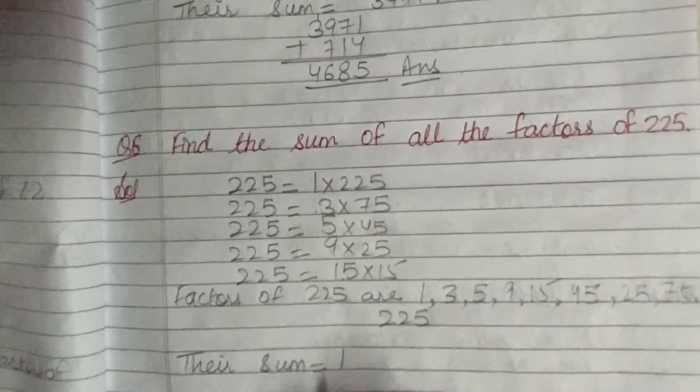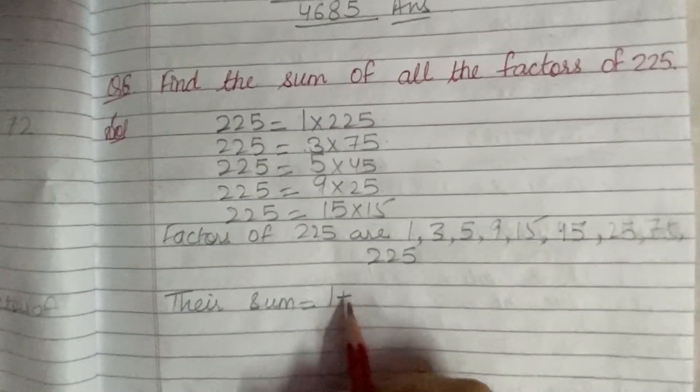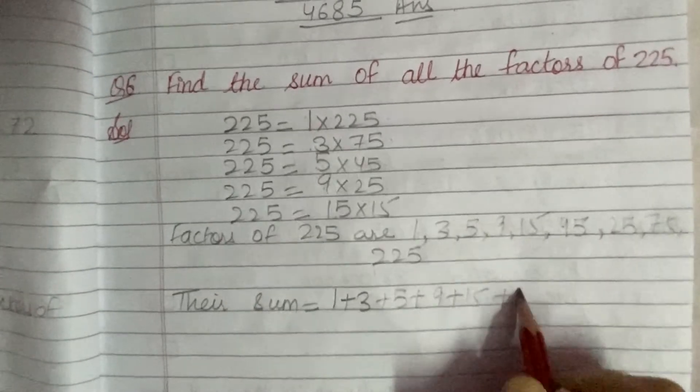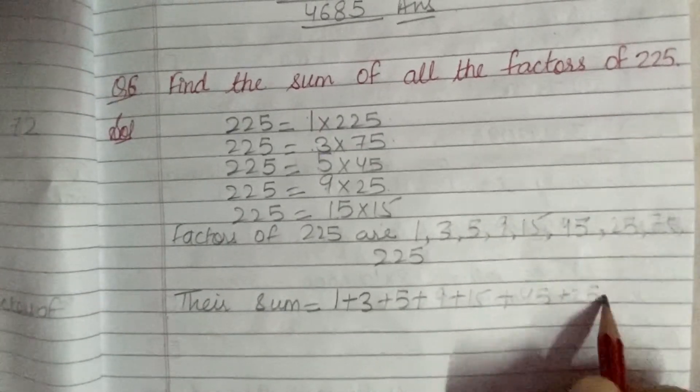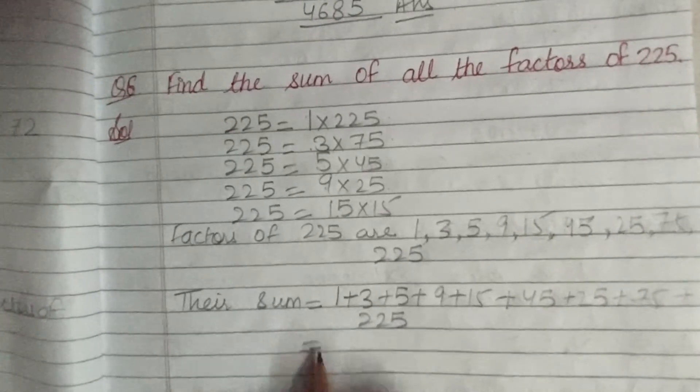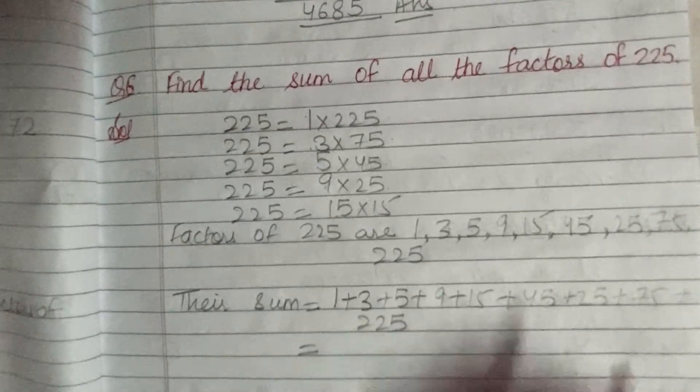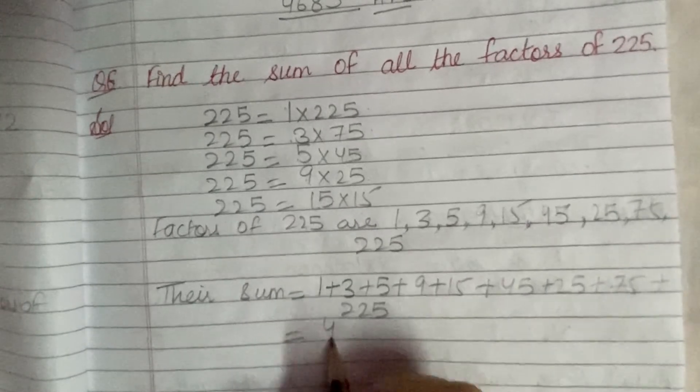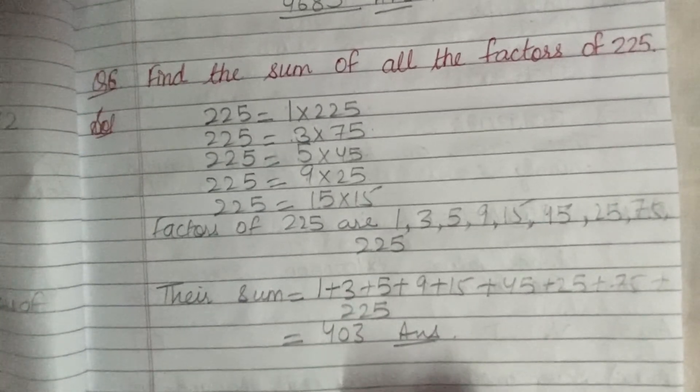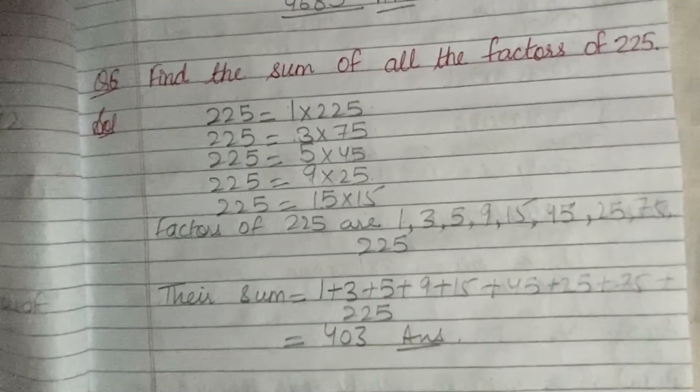On adding 1 plus 3 plus 5 plus 9 plus 15 plus 45 plus 25 plus 75 plus 225, you will get 403 as your answer. Hopefully, this question number 6 is clear to you.